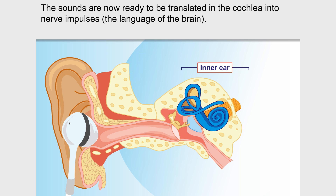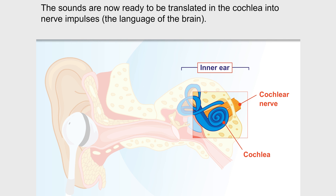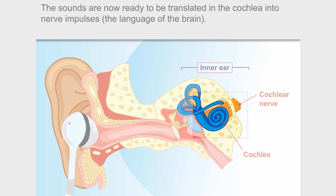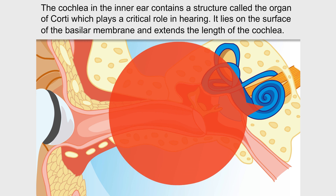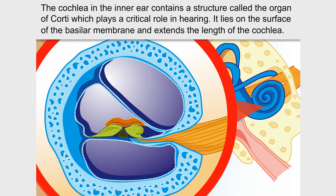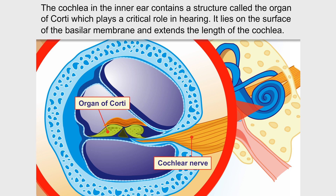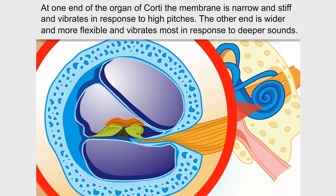The sounds are now ready to be translated in the cochlea into nerve impulses, the language of the brain. The cochlea in the inner ear contains a structure called the organ of corti, which plays a critical role in hearing. It lies on the surface of the basilar membrane and extends the length of the cochlea.